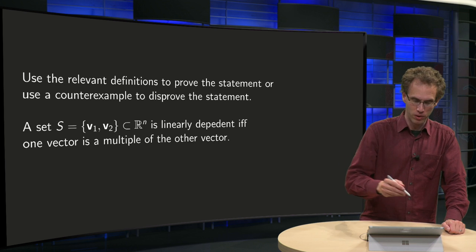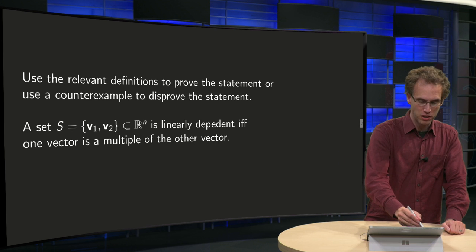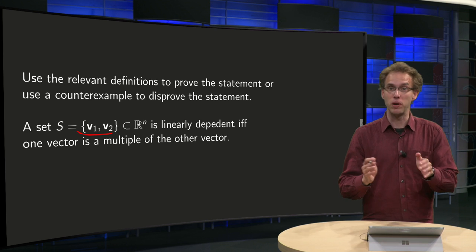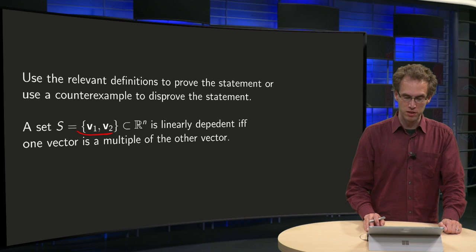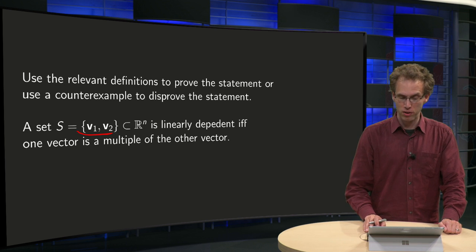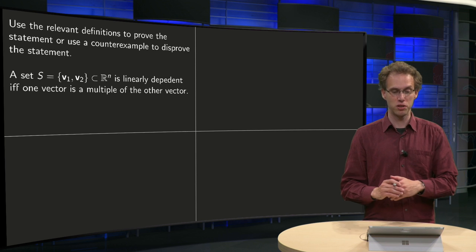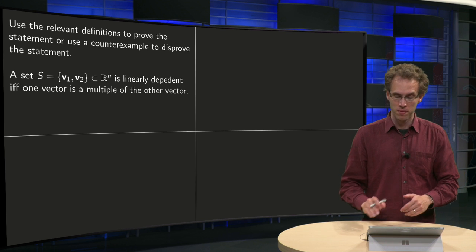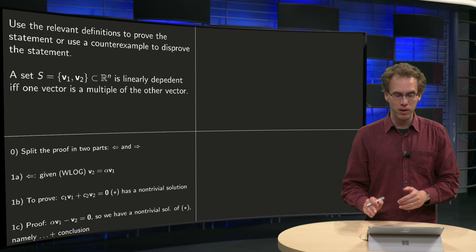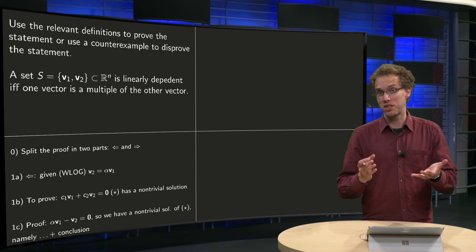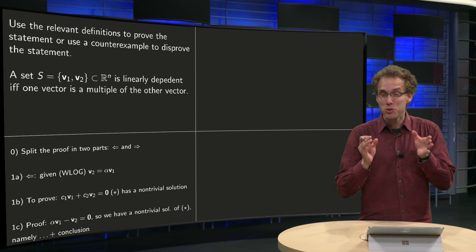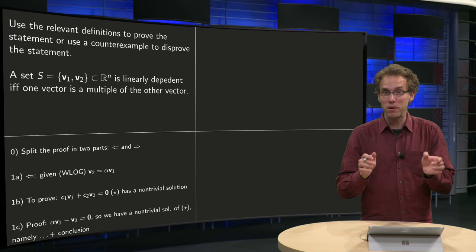So what do we have? A set of two vectors v1, v2 in R^n, and the statement is that it is linearly dependent if and only if one vector is a multiple of the other. The most important step to note is that you actually have to prove two things: two implications.